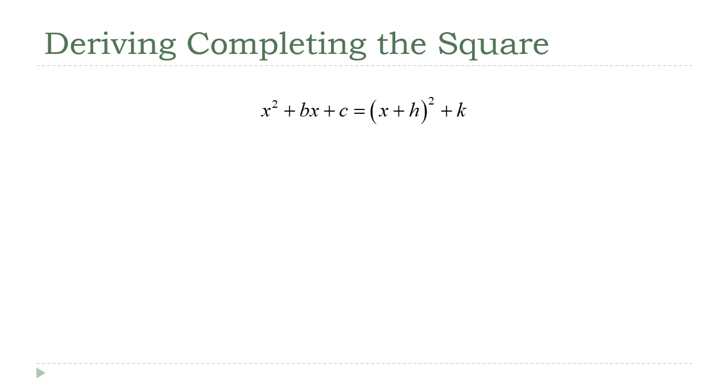In your algebra classes we usually just give you the formula: add b divided by 2, square that whole thing, and that'll give you what you need. Well, if you ever wondered where that b over 2 quantity squared formula came from, that's what we're going to talk about here. We're going to see where that number comes from.